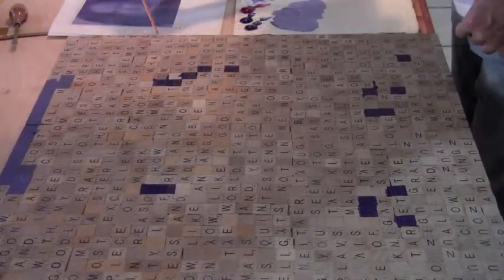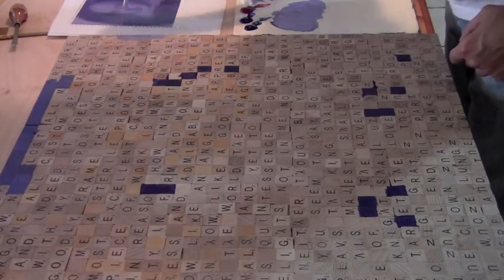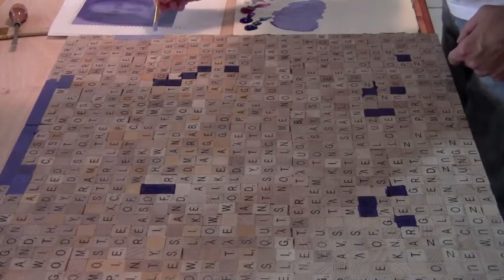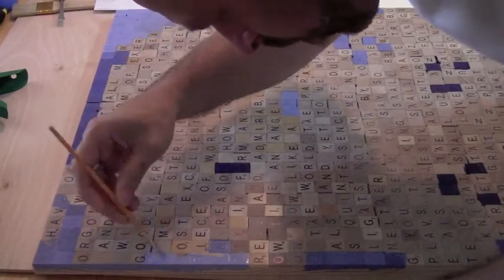So the whole piece is not exactly two by two foot square because of the variance in the size of each of those pieces. I learned about all the idiosyncrasies of Scrabble pieces as I was working on these.